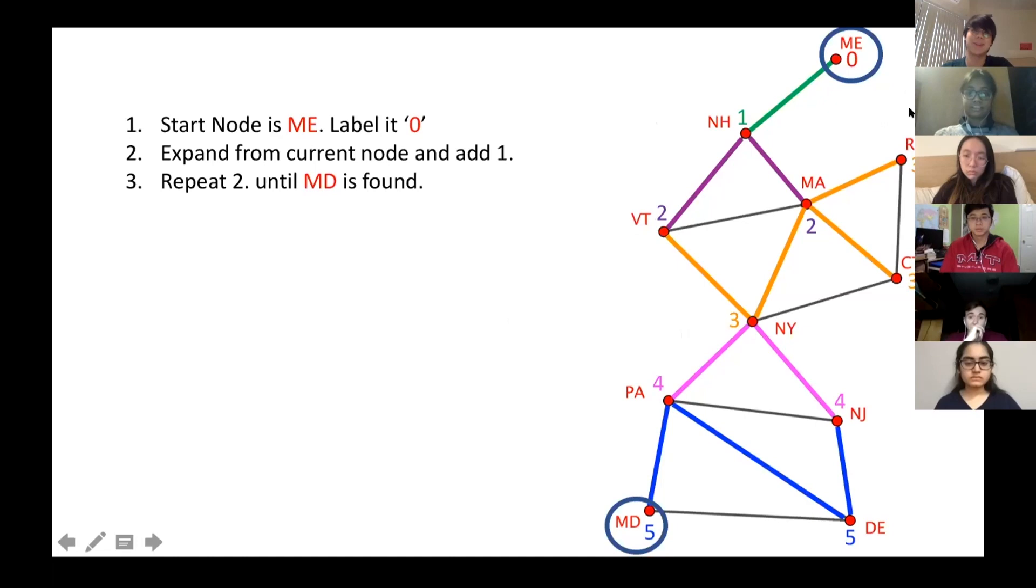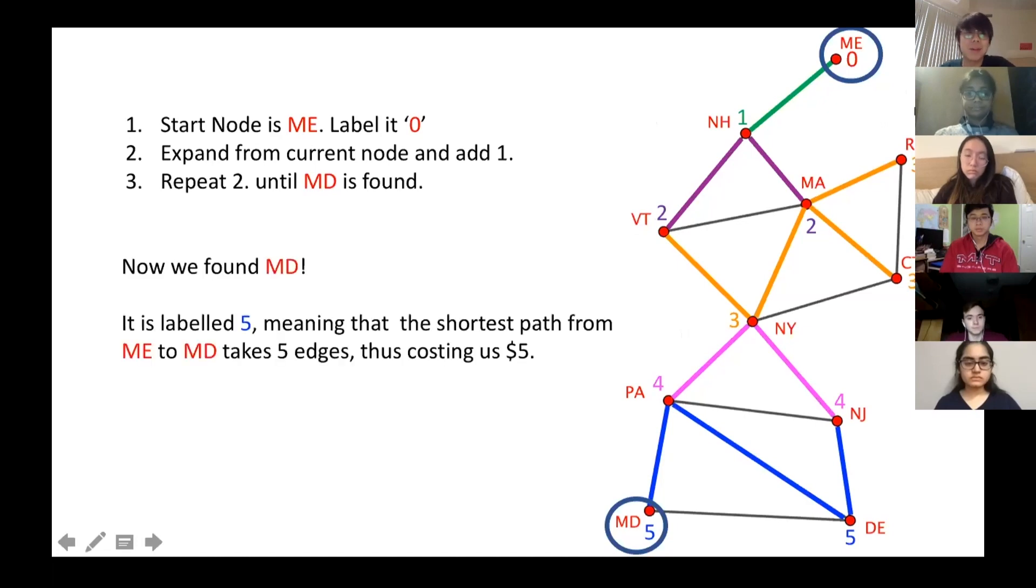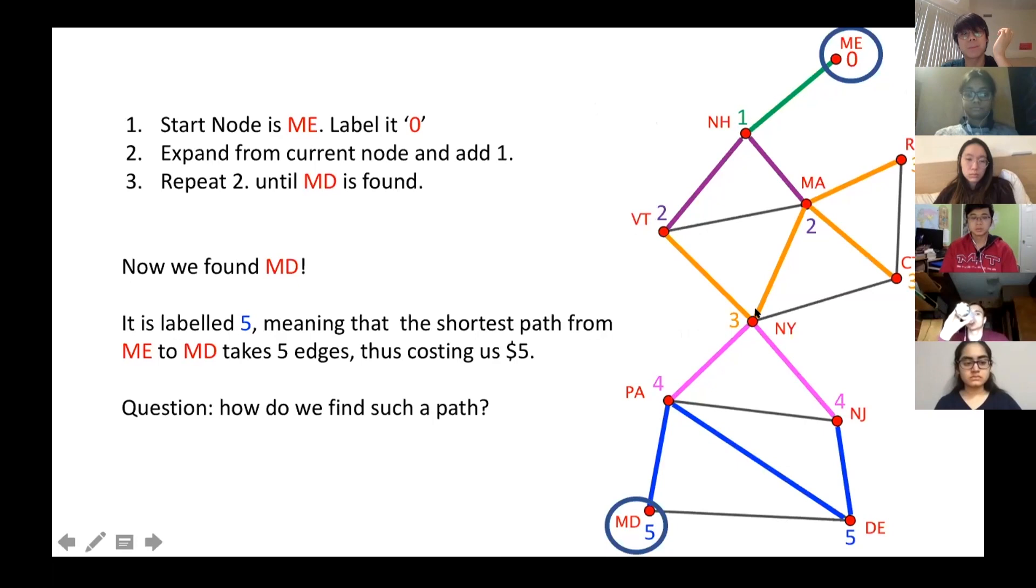Is it clear on the procedure? Yeah, sounds good. So we found Maryland at level five, meaning that to go from Maine to Maryland, you need to take five edges. However, these procedures only tell you the number, the least number of edges you need to take, but it doesn't exactly tell you what path you should be taking.